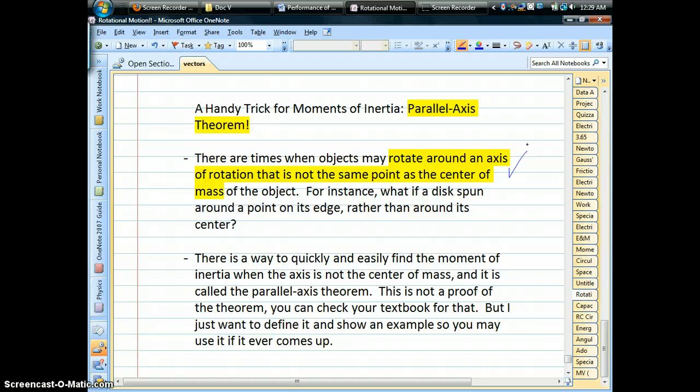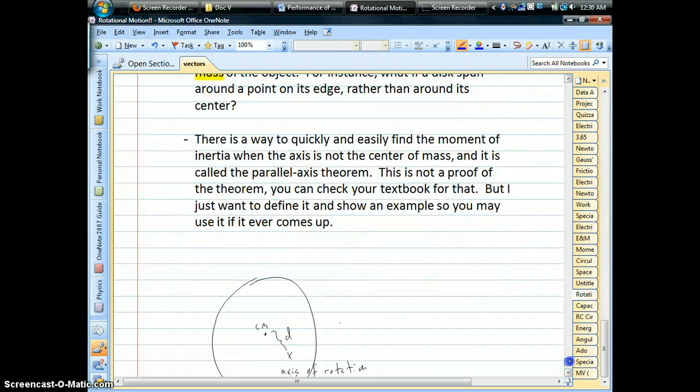For example, if you were to take a disc and spin it instead of around its center, what if you spun it around a point on its edge, or just drilled a hole in a place anywhere else in the disc other than the center? What would the moment of inertia be? Because if that disc was going to rotate around that new axis of rotation, the inertia becomes an essential part of this. So this parallel axis theorem is a quick and easy way of doing it, and I just wanted to give an example or two of what I mean by it.